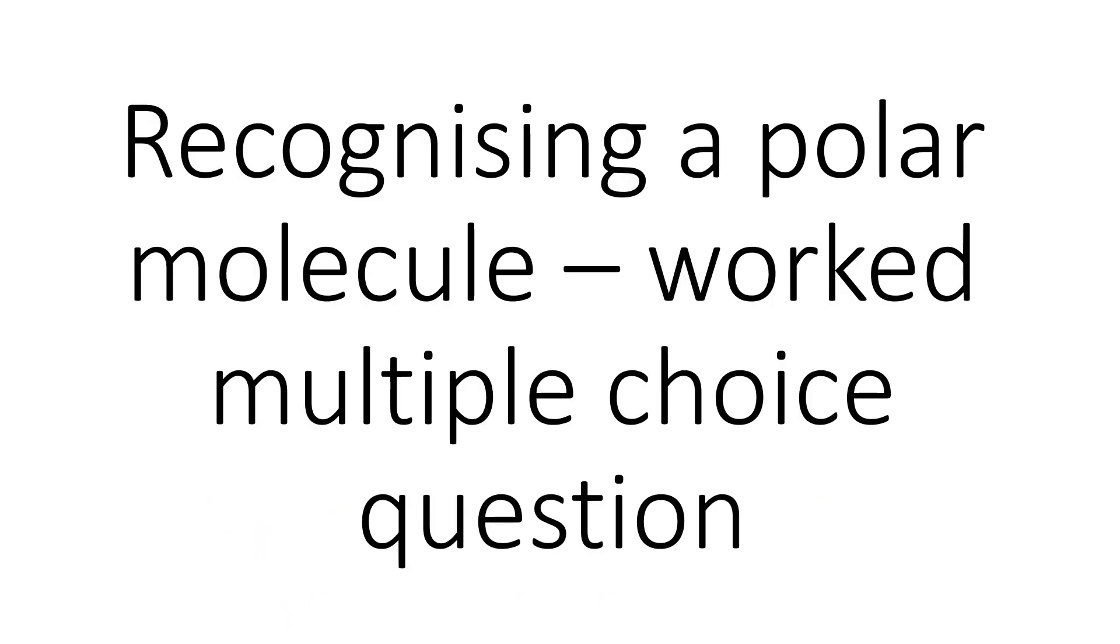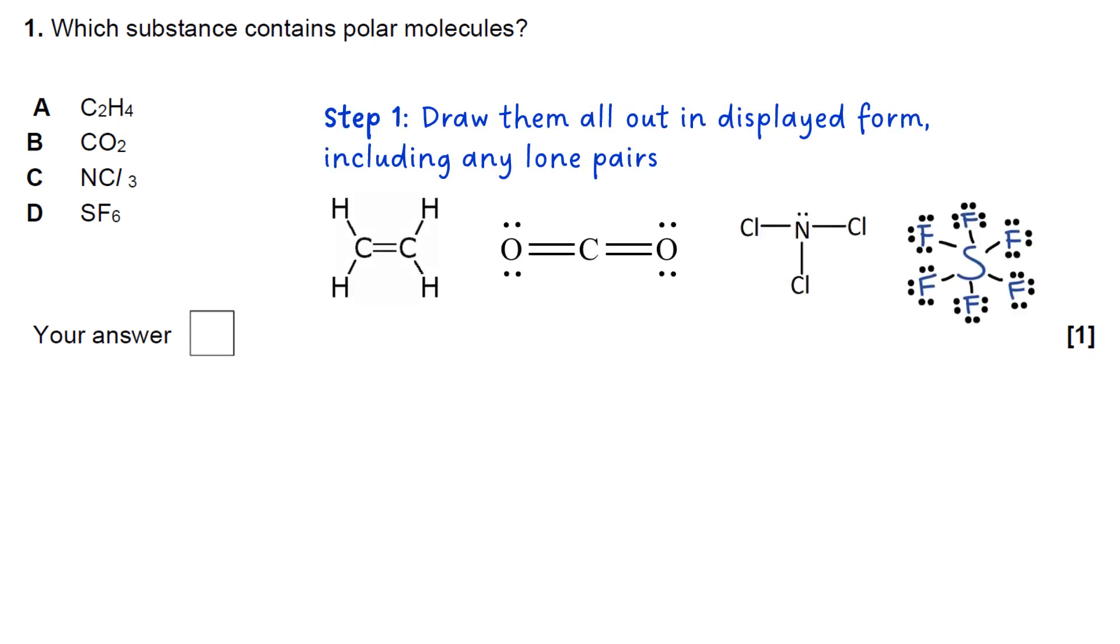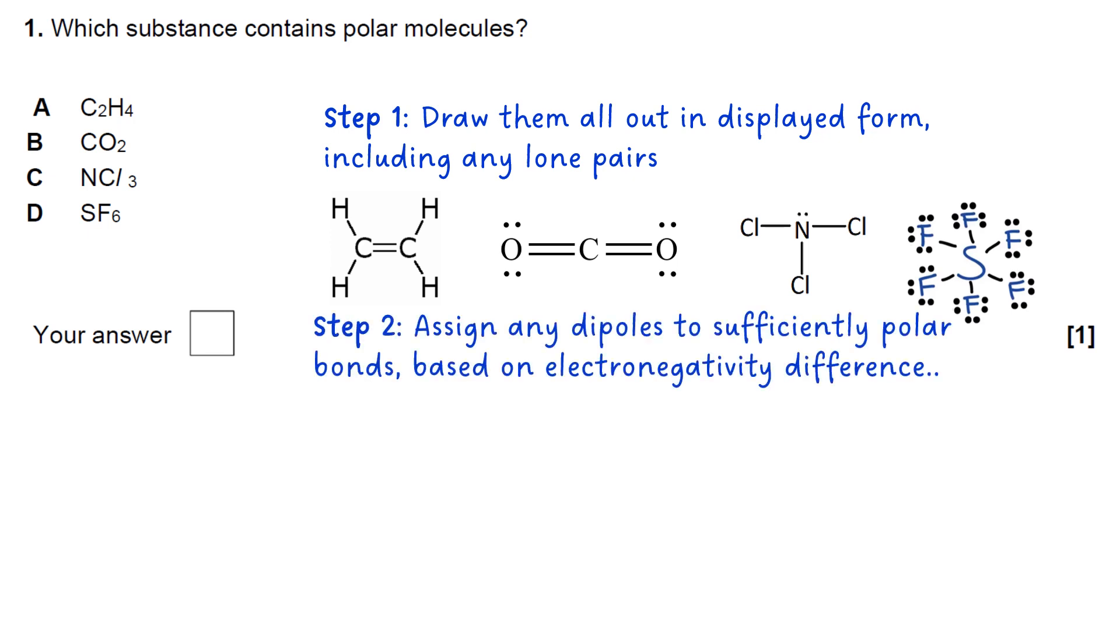So let's look at a typical multiple-choice exam question where you'd have to apply this idea. This asks you which substance contains polar molecules. We don't have the benefit of having the structures drawn out for us. The first thing to do is draw the structures out and include any lone pairs. The next thing is assign any dipole to sufficiently polar bonds, meaning if there's an electronegativity difference.